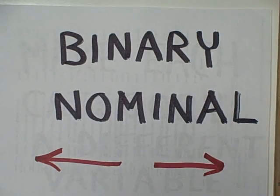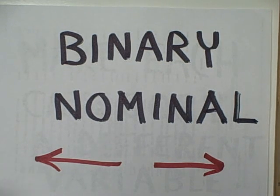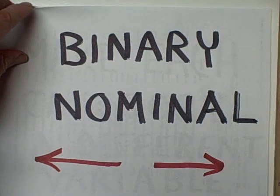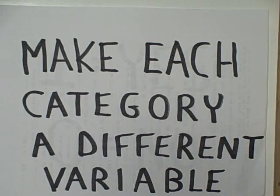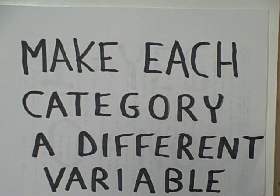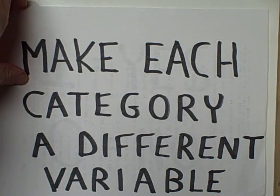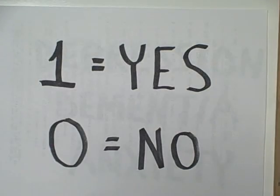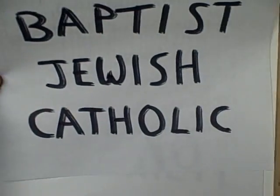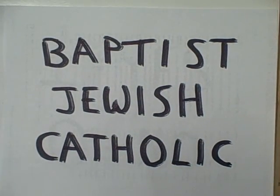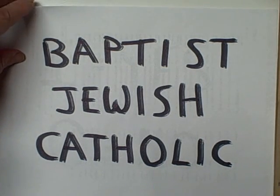A better way to handle this situation is to go back to a binary nominal form of scaling — you're either Baptist or you're not Baptist. In other words, take the multiple nominal variable and change it to several binary nominal variables. Make each category a different variable, and on that variable we're going to measure yes or no. Let's make three variables: Are you Baptist? Yes or no. Are you Jewish? Yes or no. Are you Catholic? Yes or no.